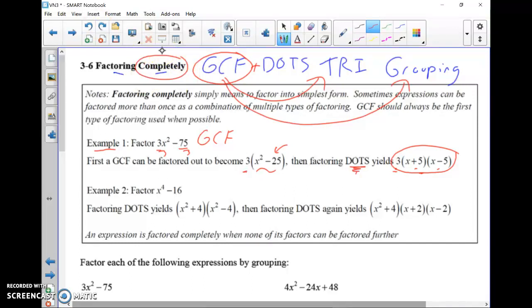It just means factor all the way into simplest form. Factor so that nothing can be factored further - there's no GCFs, there's no DOTS, there's no trinomials, there's no grouping. Nothing in this form can be factored further. So a lot of times, these are set up as a GCF, and then the quotient that's left over is a DOTS, or the quotient that's left over is a trinomial, or the quotient that's left over is grouping. That's very common.